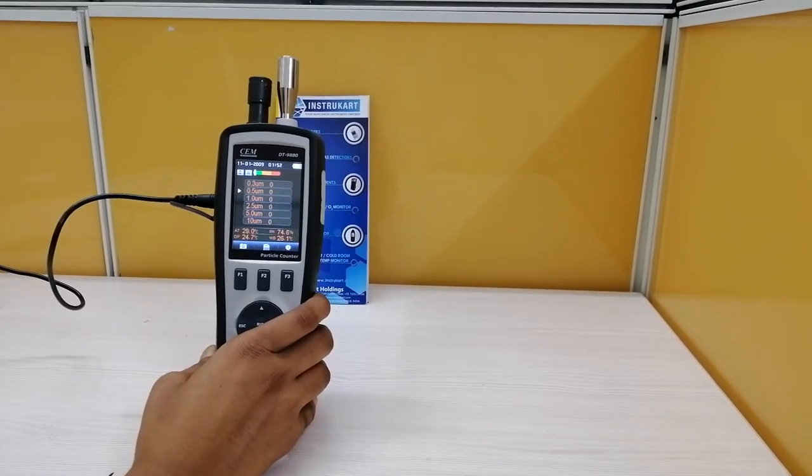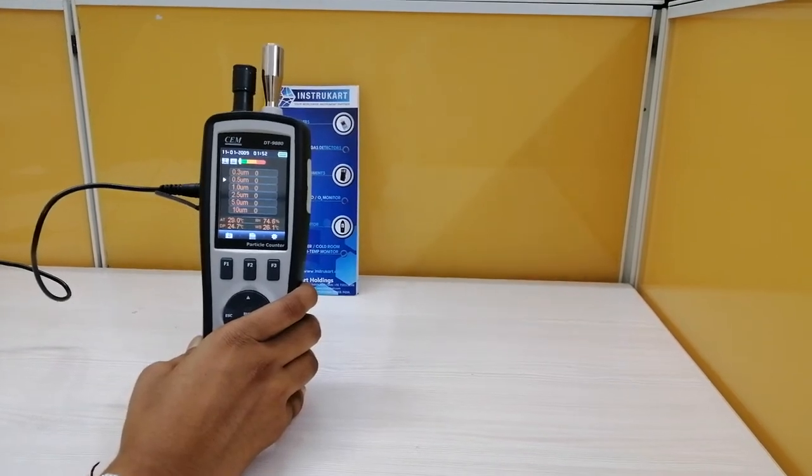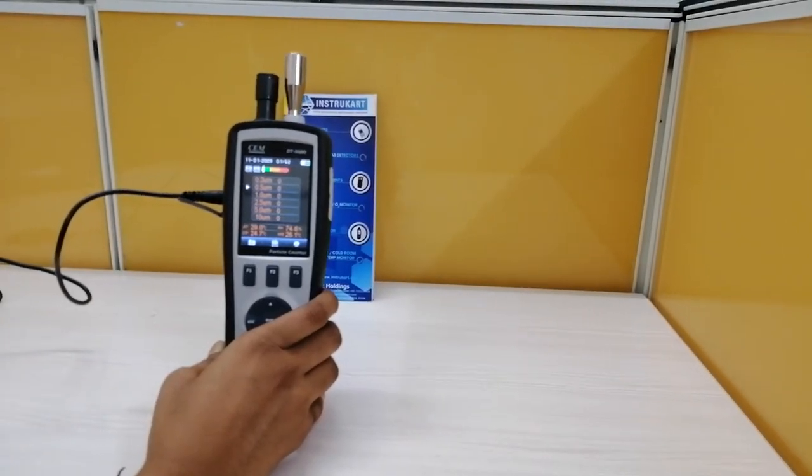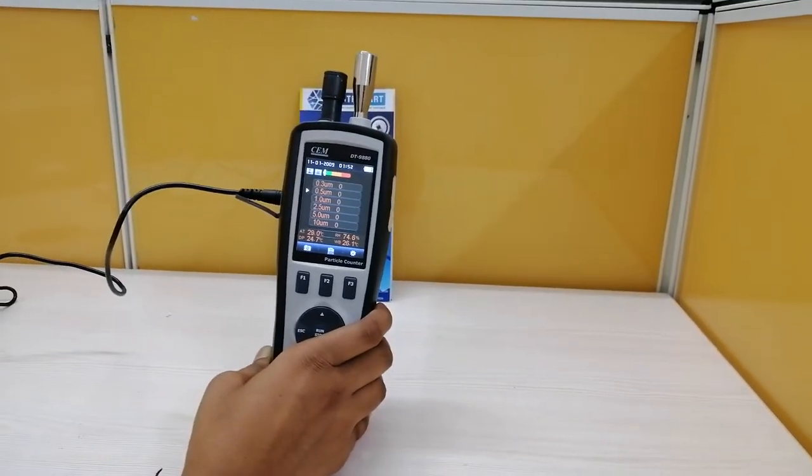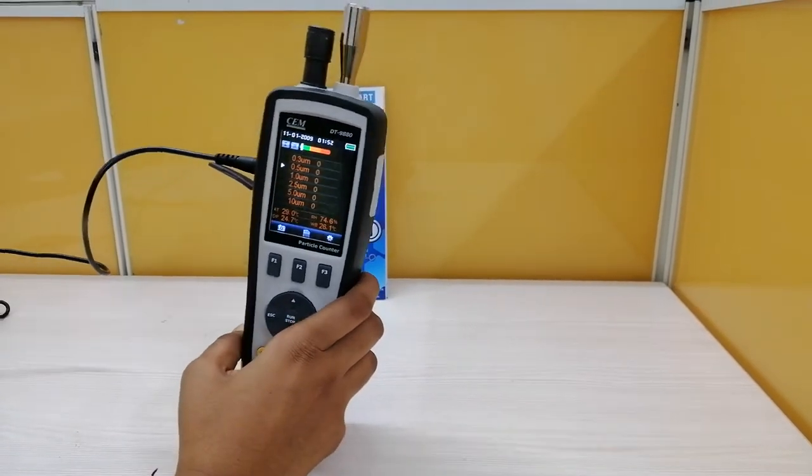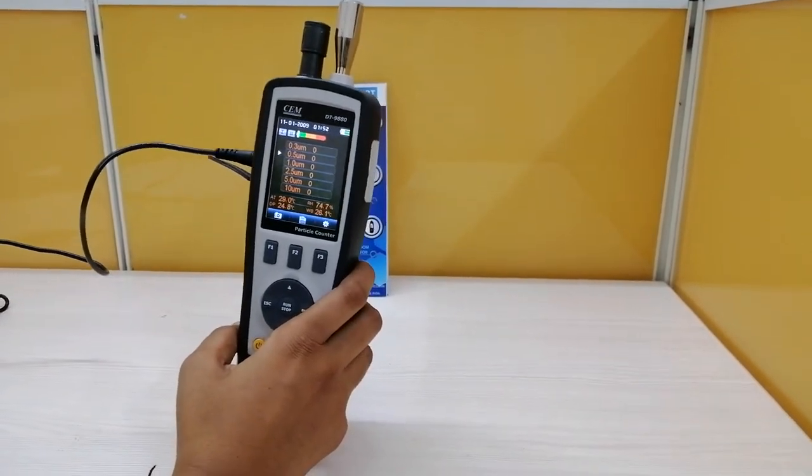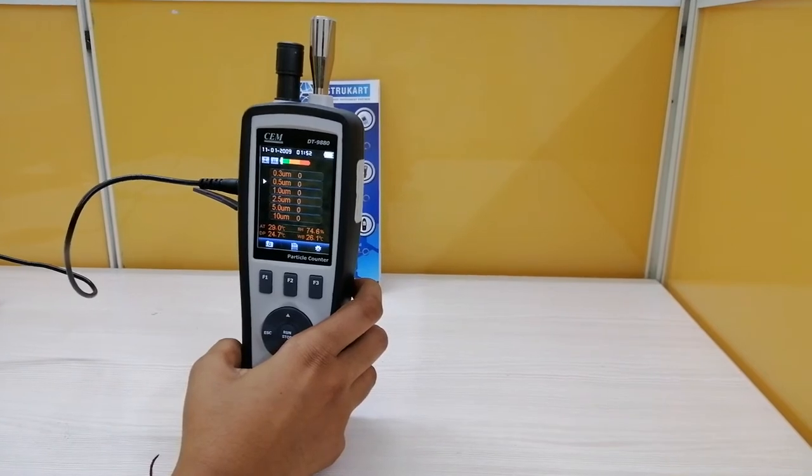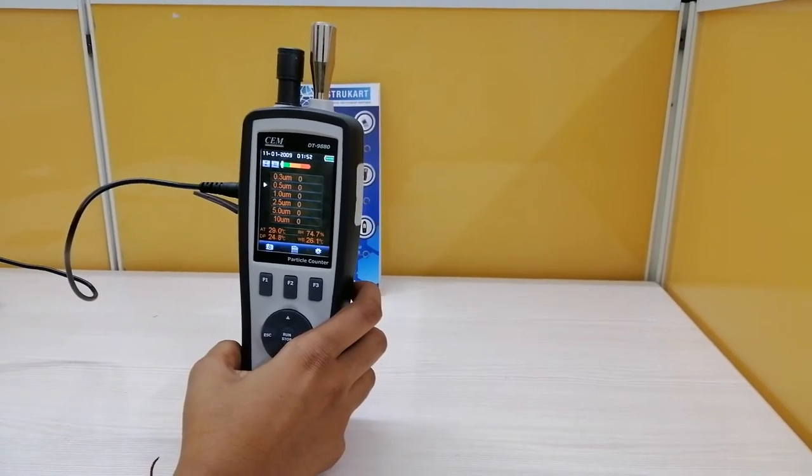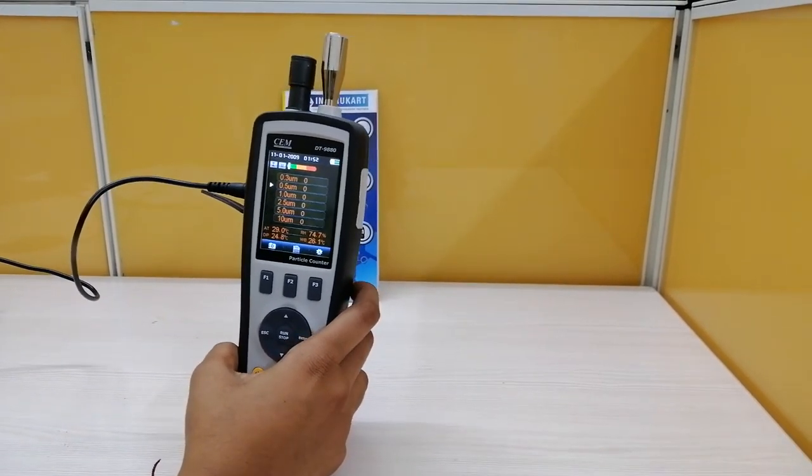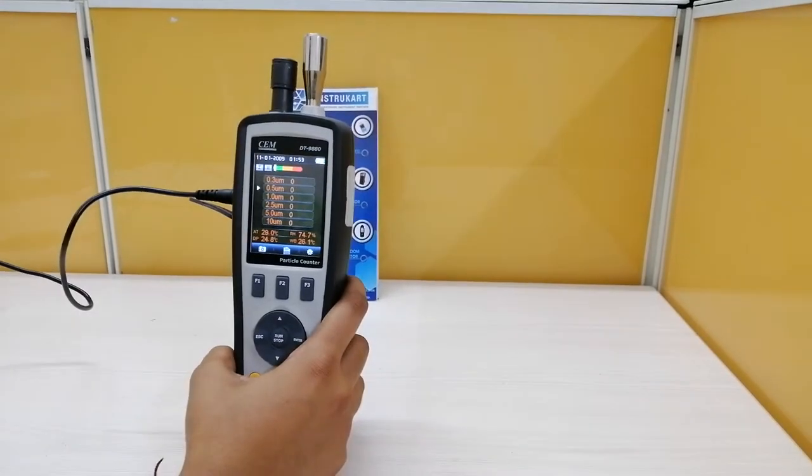...the particle sizes like 0.3 microns, 0.5, 1, 2.5, 5, maximum of 10 microns. There are three types of particle counters: handheld, remote, and portable, which can be chosen based on your application.